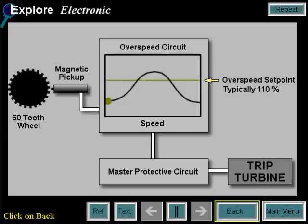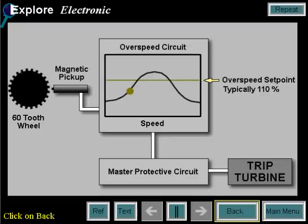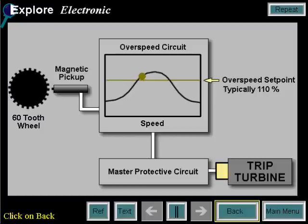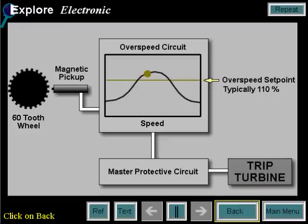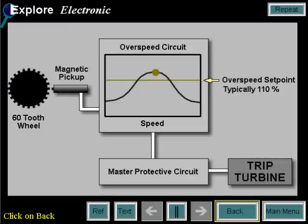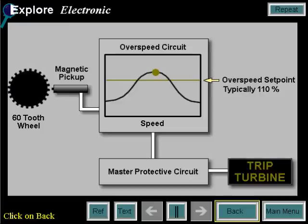The electronic overspeed protection function is performed as follows. The turbine speed signal derived from the magnetic pick-up sensors is compared to an overspeed setpoint. When the turbine speed signal exceeds the setpoint, the overspeed trip signal is transmitted to the master protective circuit to shut down the turbine. An electrical overspeed trip message will be displayed.